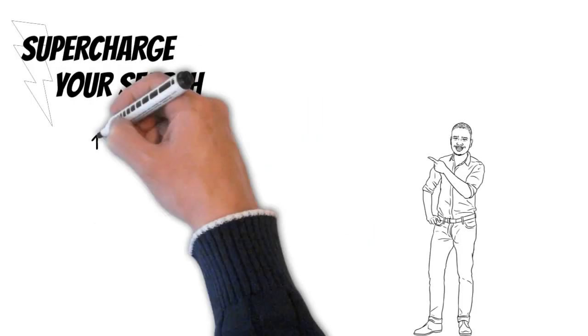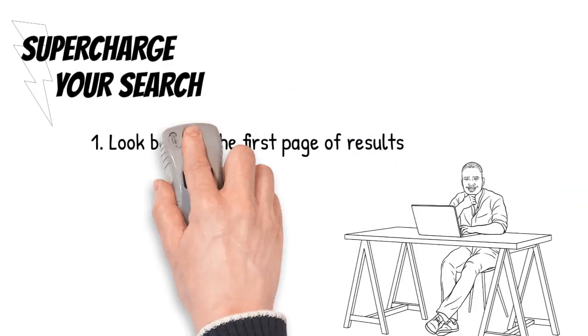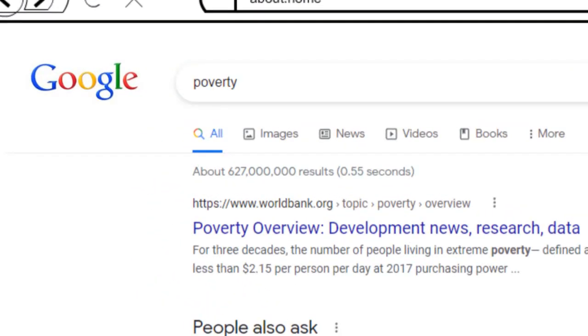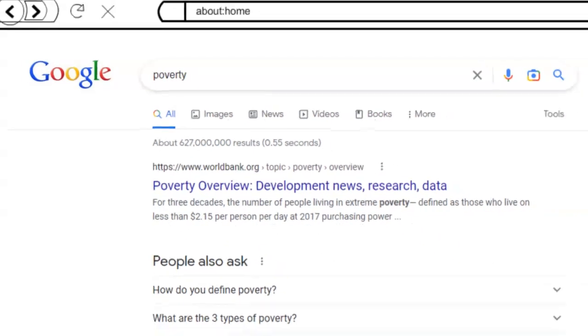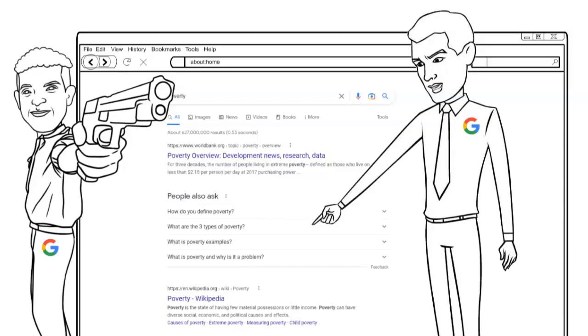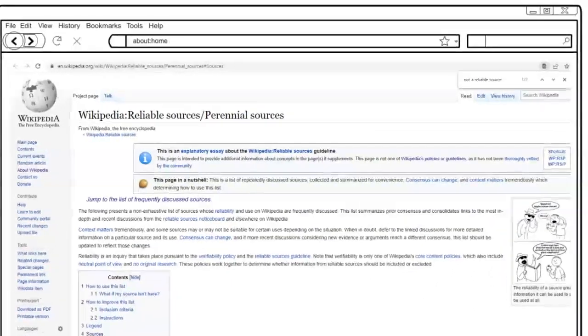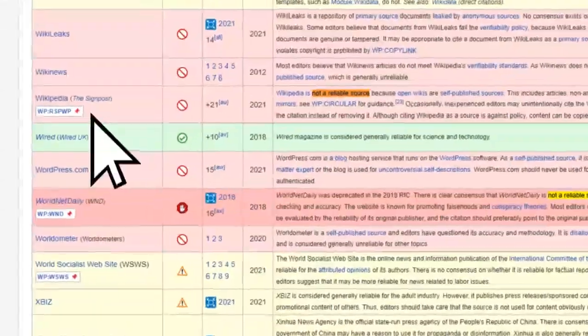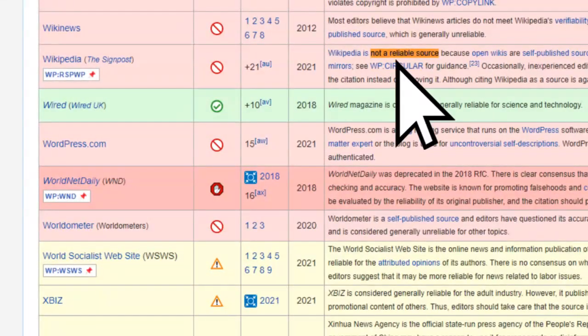One, look beyond the first page of results. Many searches yield millions of results. So if the issue is important, why settle for what other people want you to see? Ever notice how Google frequently presents a Wikipedia page among its top results? Yet even Wikipedia admits that Wikipedia is not a reliable source.